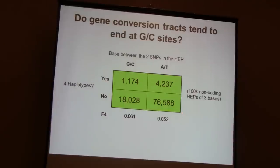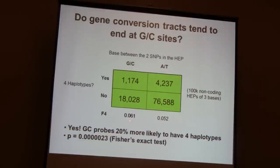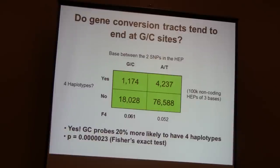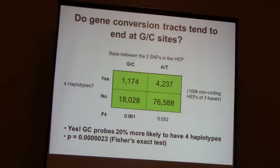To test this independently, I took all probes that are exactly three bases long — so with only one base between the two SNPs — which can be either a GC or an AT base pair. There are 100,000 of these in non-coding areas. A contingency table asking whether base content is correlated with passing the four-gamete test shows a very strong signal: GC probes are 20% more likely to have all four haplotypes than AT probes — 5 to 6 percent absolute difference — significant to many digits.